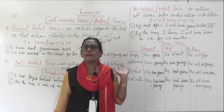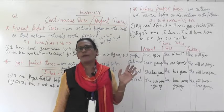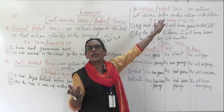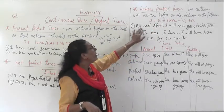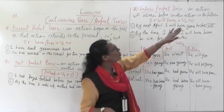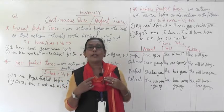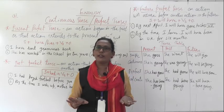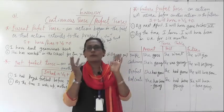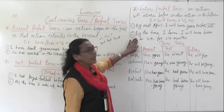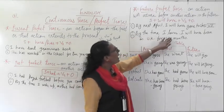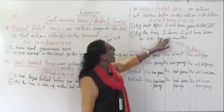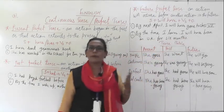Wherever you see 'have', 'has', or 'had', that indicates a perfect tense. 'Will' means future, so 'will have' means future perfect — very easy to recognize. Example: 'By next April, I will have gone to class 7th.' Second example: 'By the time I leave, I will have been in UK for 6 months.' Wherever 'will have' appears, that is future perfect tense.